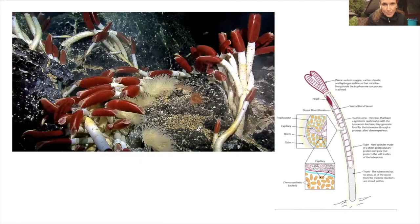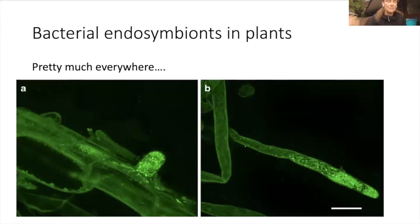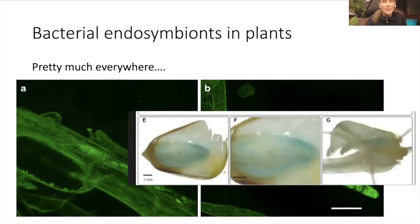Tubeworms live at the bottom of the Atlantic Ocean where there's no light. These tubeworms associate with chemosynthetic bacteria - bacteria that can break down chemicals to produce energy - and this is the entire basis of the food chain down there. Pretty much everywhere you look you're going to see endosymbionts. You take a big organism, stain it or cut it up, and you are going to see bacteria. This is a plant root and you can see all the tiny fluorescent lights - those are bacterial cells or fungi, even within the plant embryo. Here's a corn seed and inside is a little tiny baby corn plant - bacteria are already in the embryo.